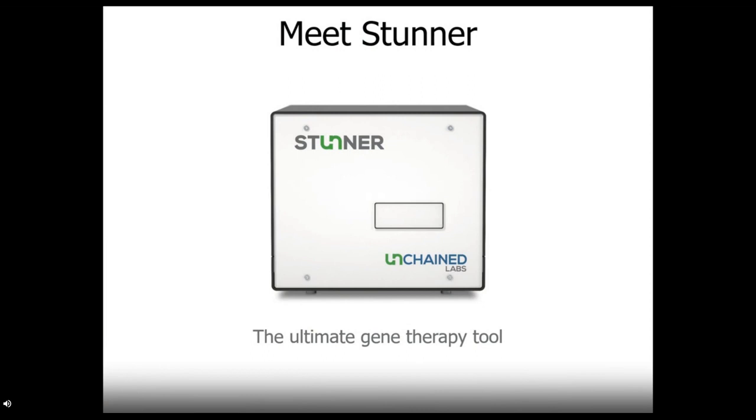Meet Stunner, the ultimate gene therapy tool. Stunner is the only system that pulls together UV-Vis concentration, dynamic light scattering and static light scattering data from just the same two microliter samples. This means Stunner can dig into AAVs, LNPs, and lentivirus samples for all kinds of info, such as nucleic acid quant, sizing, and even AAV titers.